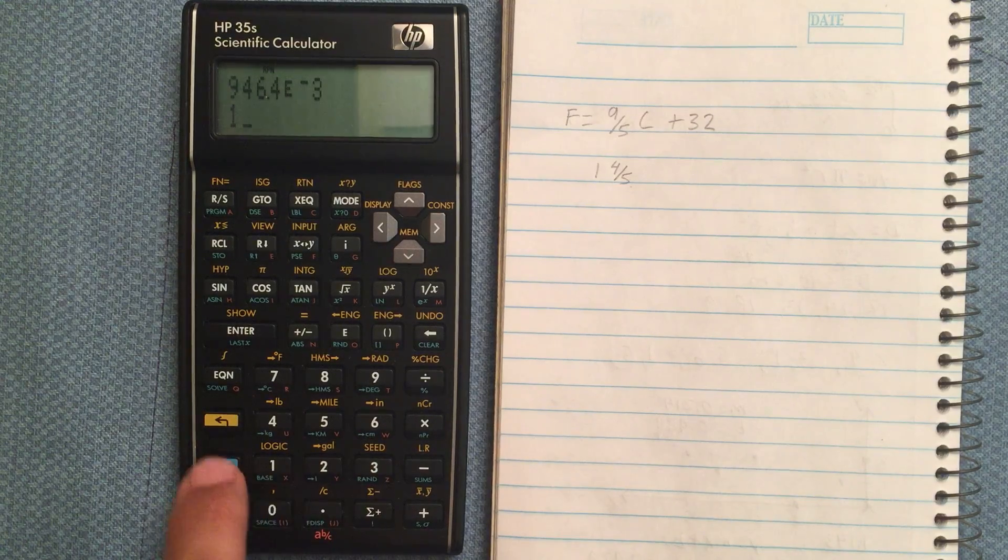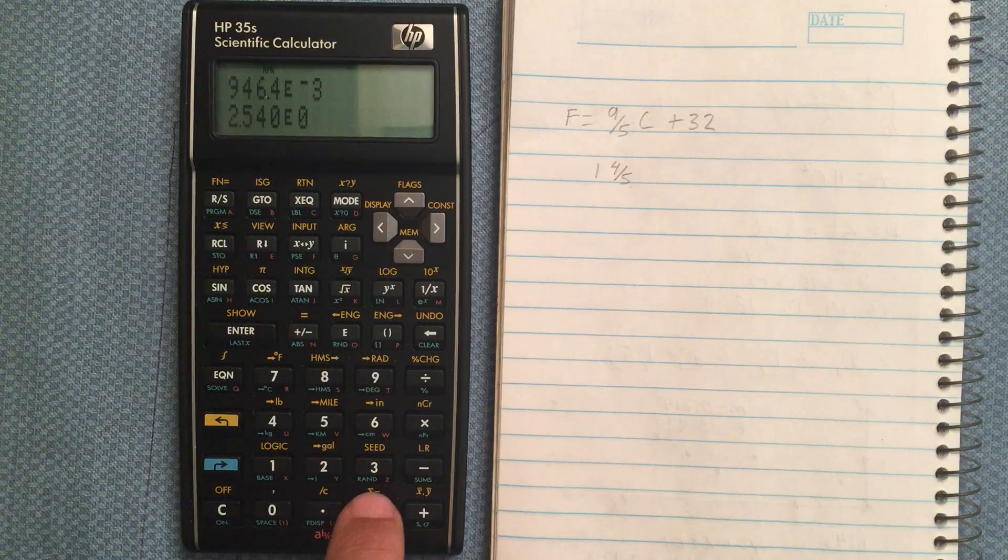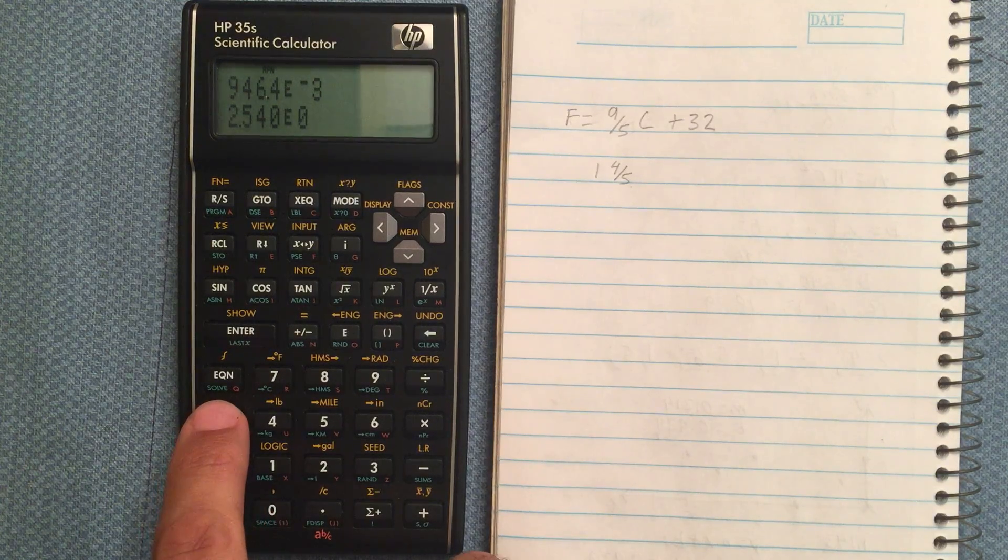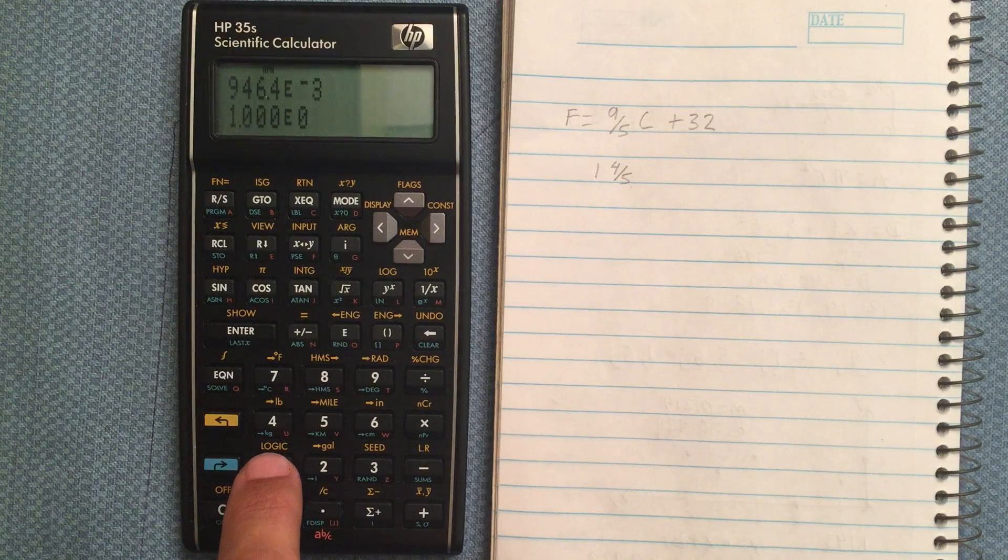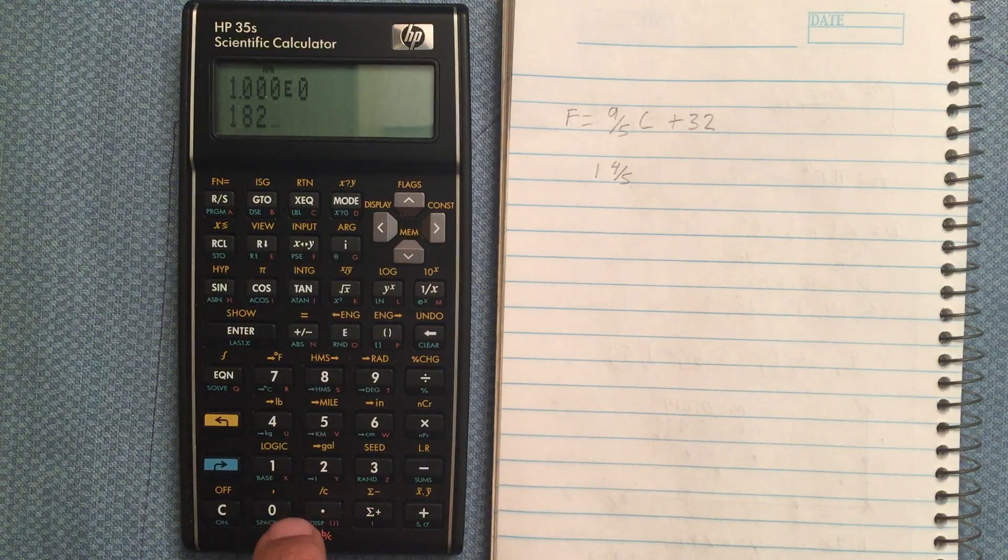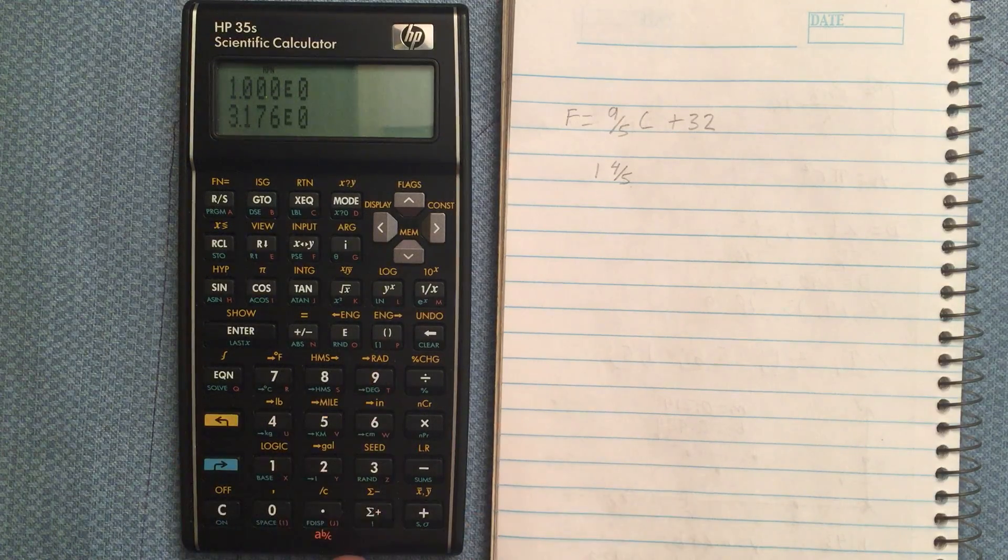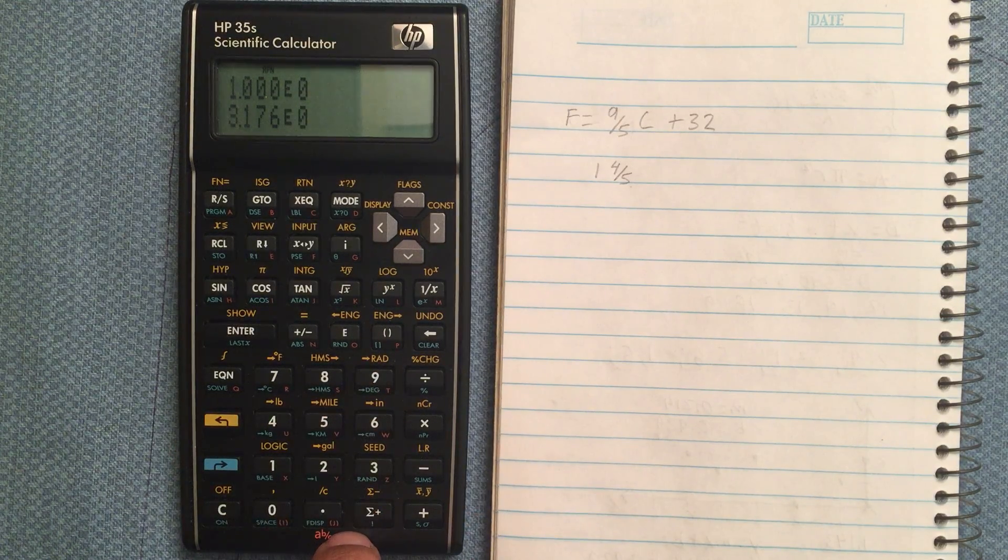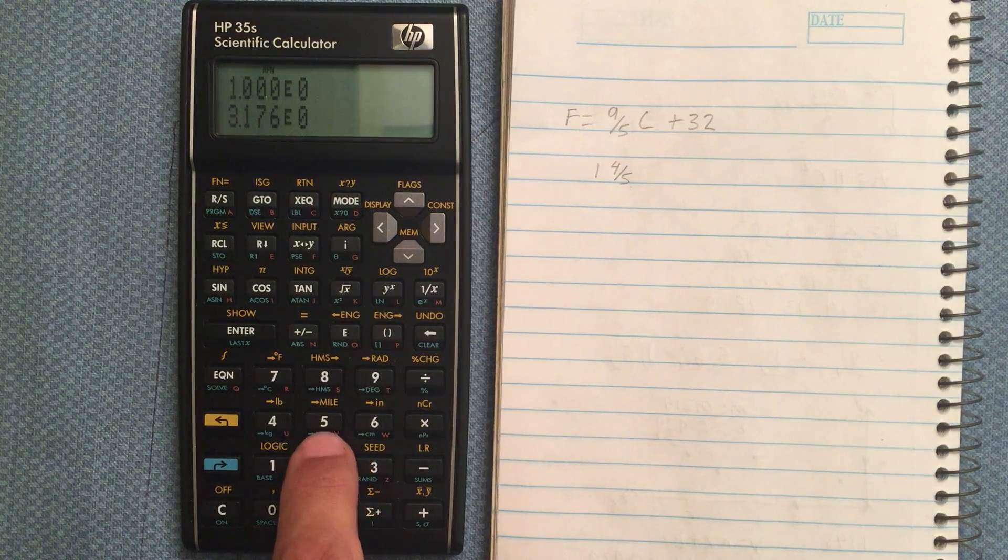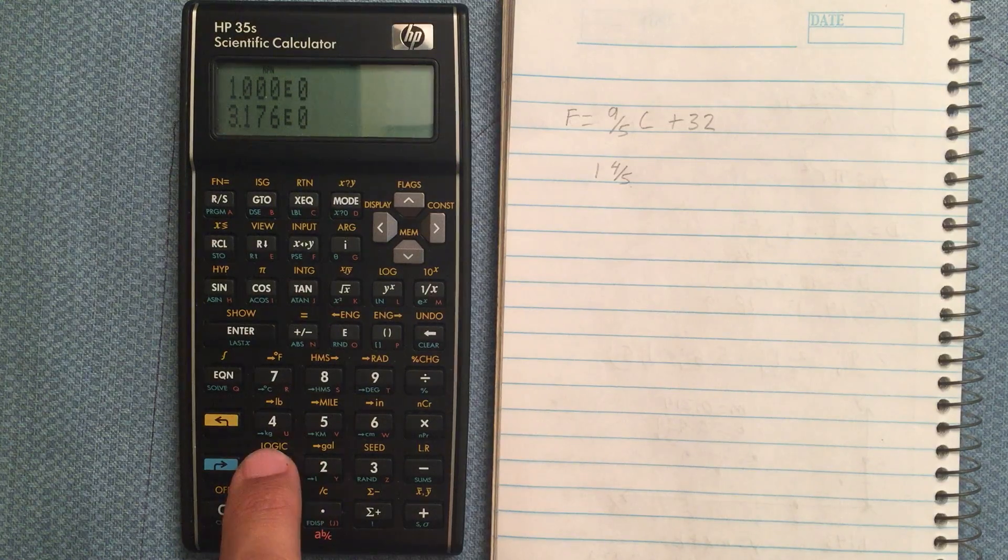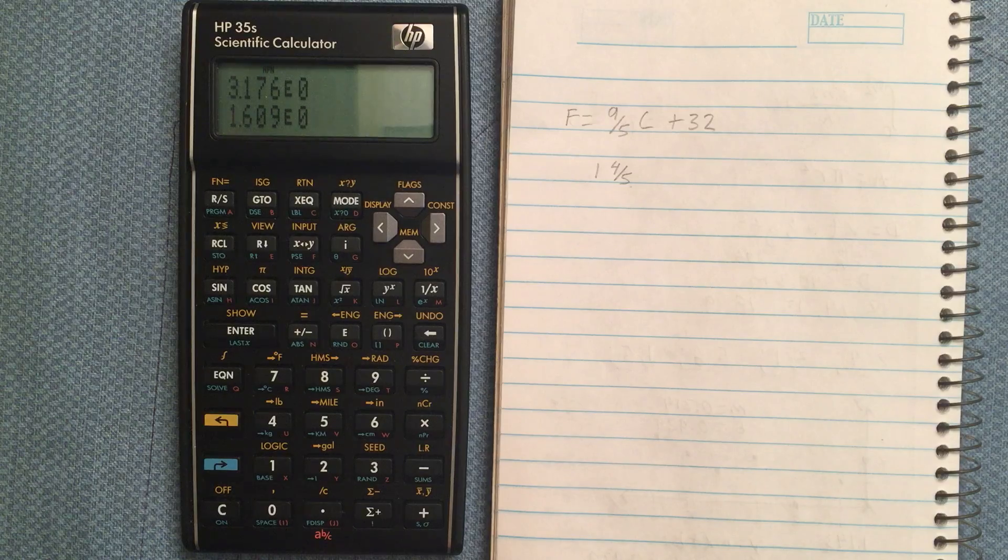Inches to centimeters, 2.54. Back to inches. Degrees to radians, 182 degrees is 3.176 radians. Miles and kilometers. One mile is 1.6 kilometers.